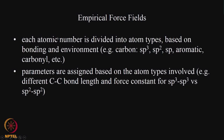In empirical force fields, each atomic number is divided into atom types based on the bonding and environment. For example, carbon can be many types: sp3 carbon, sp2 carbon, sp carbon, aromatic carbon, carbonyl carbon, cyclopropane type of carbon, cyclopropene type of carbon, and so on. Parameters are assigned based on the atom types, so each of these carbons may have different carbon-carbon bond lengths and force constants depending upon sp3, sp2, and so on.